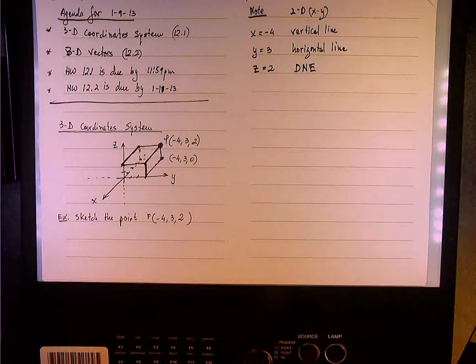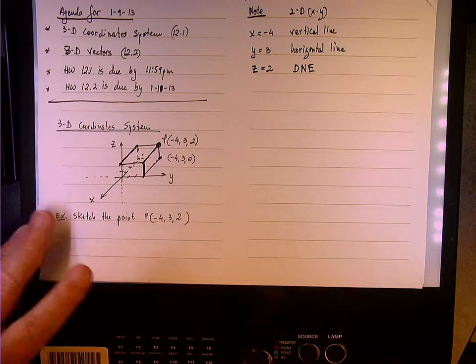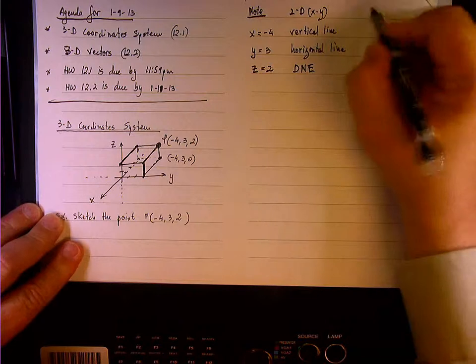Unless we have an xz plane or yz plane. But in two-dimensional, if our dimensions are only x and y, then z equals 2 is meaningless.